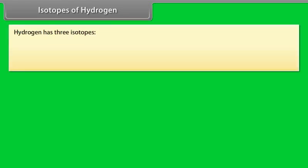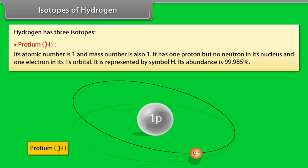Isotopes of hydrogen. Hydrogen has three isotopes. Proteum. Its atomic number is 1 and mass number is also 1. It has one proton but no neutron in its nucleus and one electron in its 1s orbital. It is represented by symbol H. Its abundance is 99.985%.